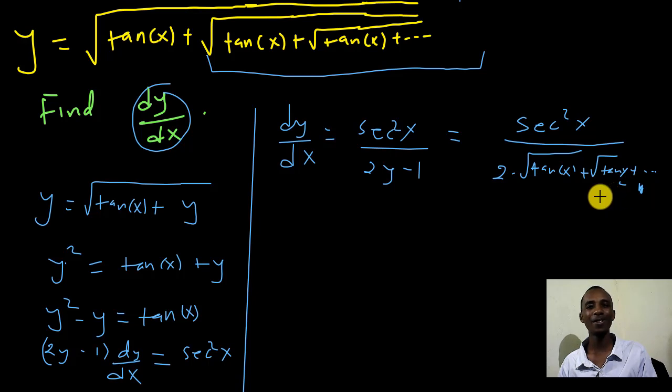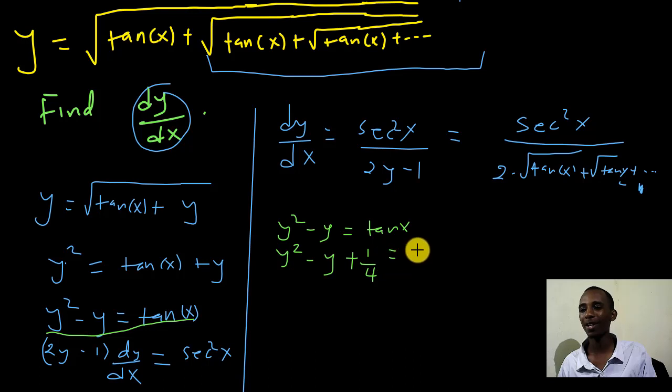But this is a little bit not interesting. We cannot tell what the answer here is. It's still ambiguous because we have all these tan x's and we don't know where this ends. So I'm going to make some little tricks to this answer to make it better. From this step, I'm going to pick it again from here. That's y squared minus y equals tan x. I'm going to add a quarter, one-fourth on both sides, because I want to complete squares.